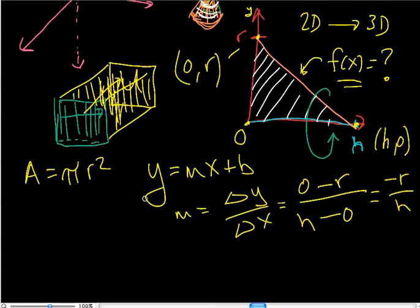is Y equals negative R over H times X, times X. I'm going to do all my X's in this color. And go back. Plus R.